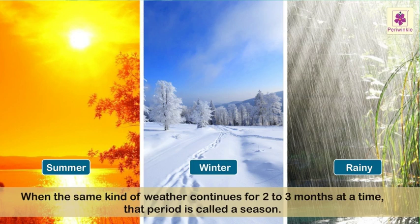You have often heard the words summer, winter, and rainy season. When the same kind of weather continues for two to three months at a time, that period is called a season.